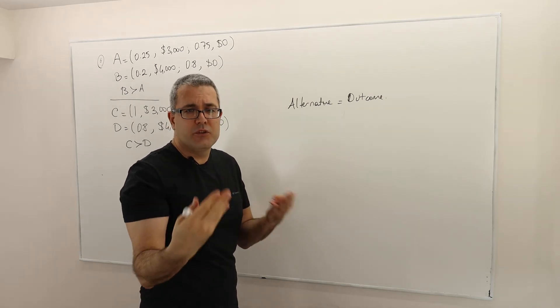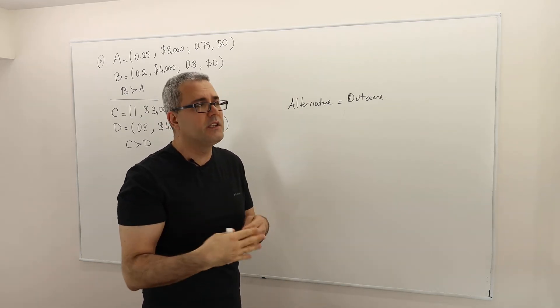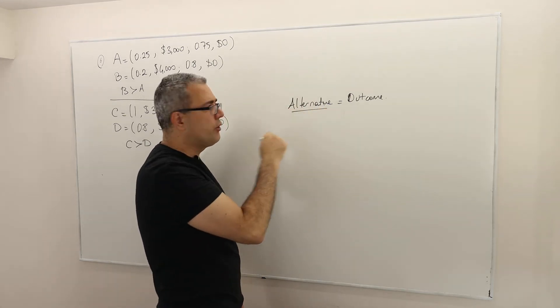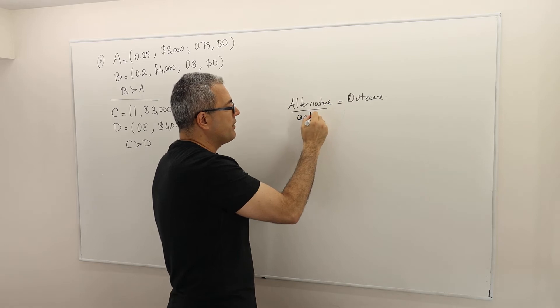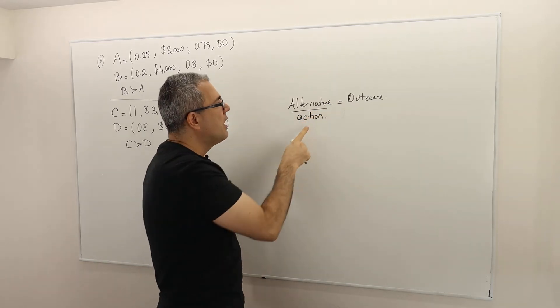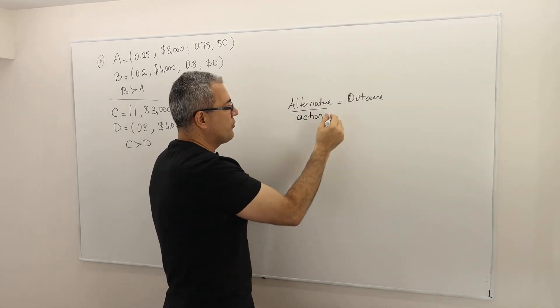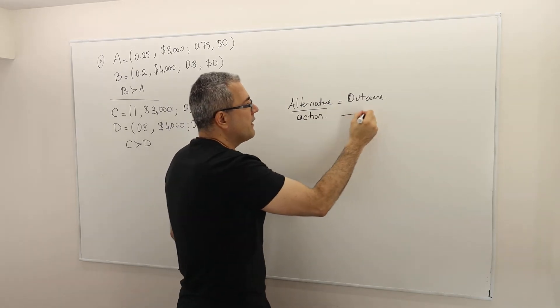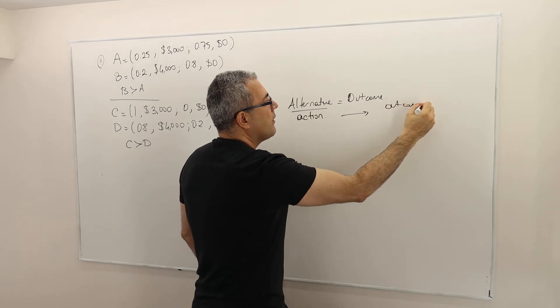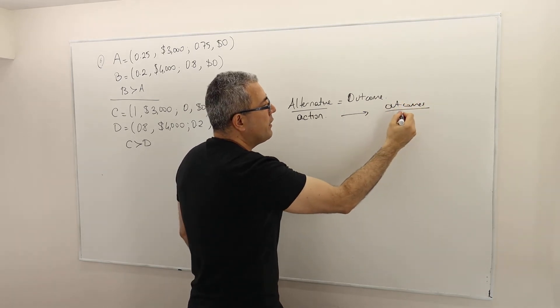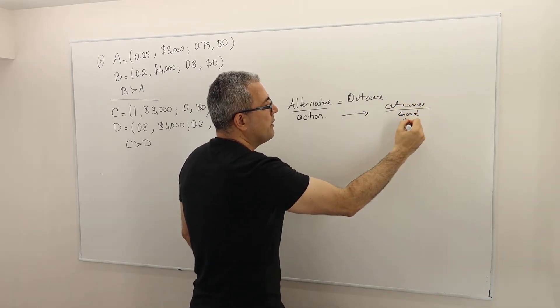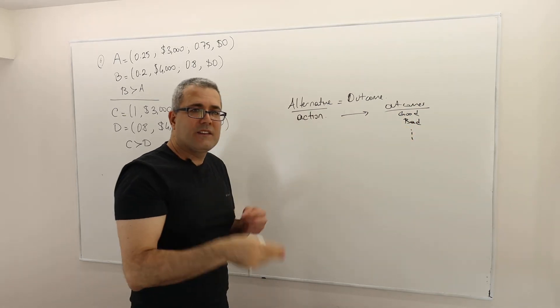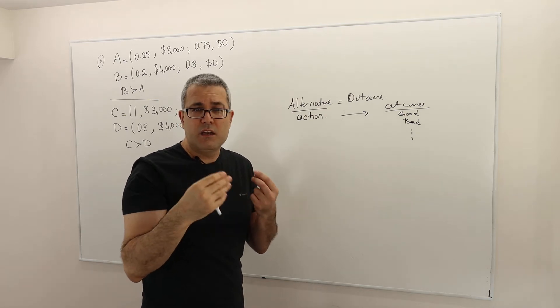So therefore, in expected utility theory or later you'll see in game theory what we do, when a decision maker chooses an alternative or an action, in game theory it's going to be called action, he or she actually chooses something like apple. But the thing is, the outcomes may vary. It could be, for example, good apple, it could be bad apple, it could be a bunch of other things. So that is the way we started the theory.